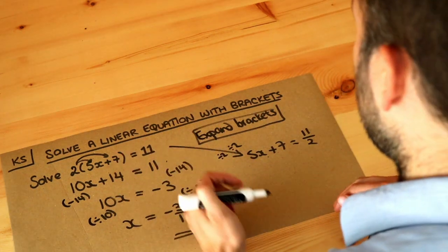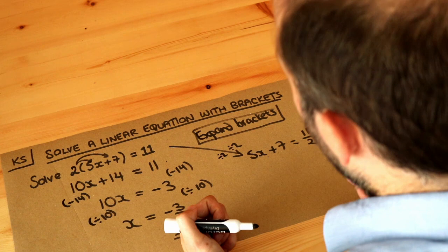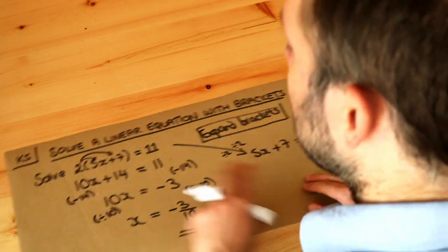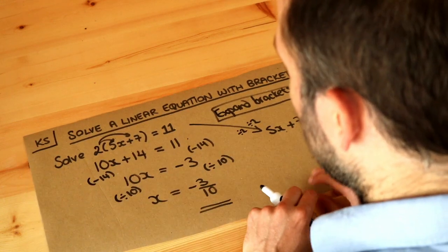The reason I wouldn't advise doing that is because then you have fractions in the equation, and they're just slightly awkward to deal with. It's easier to just expand out the brackets first.